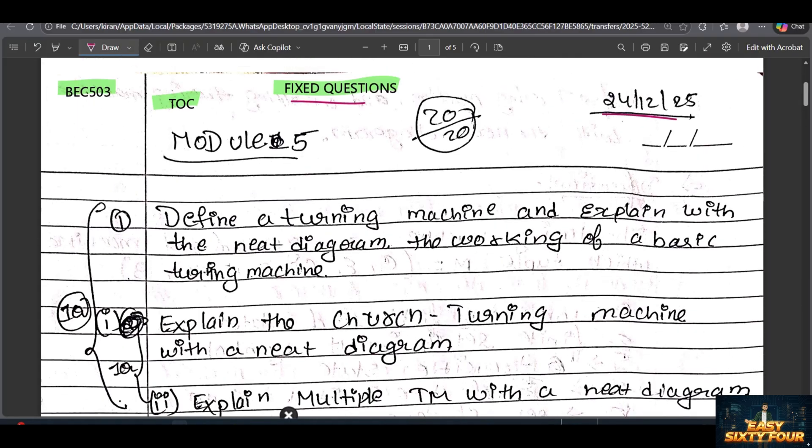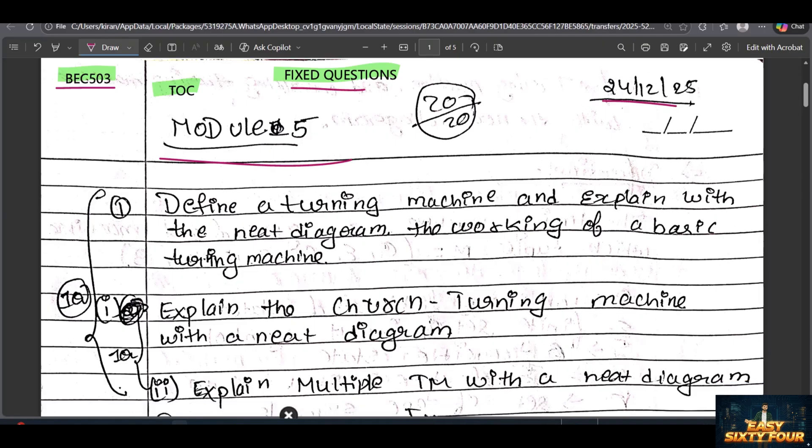We are going to discuss Model 5. You can see the subject code - sorry, it's BCS, not BES. It's BCS 503. I recently approved Digital Communication so I got confused. Okay, let's leave it.